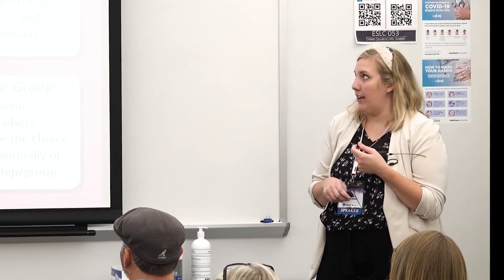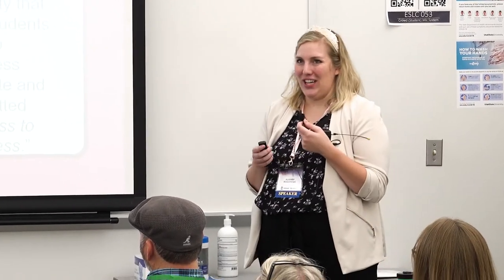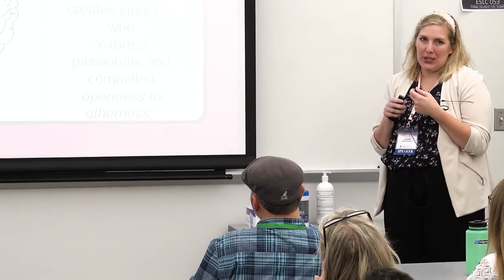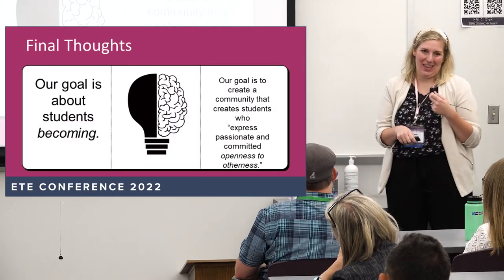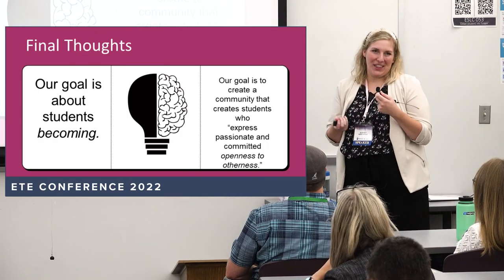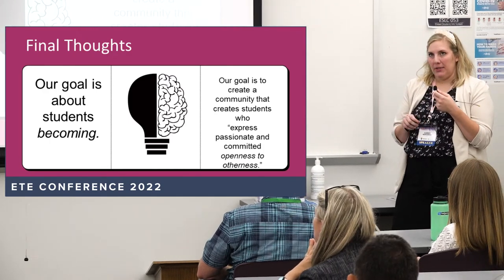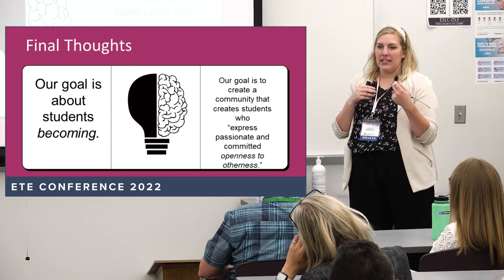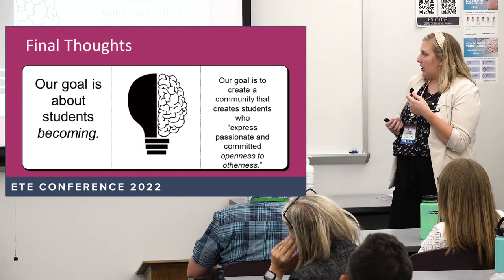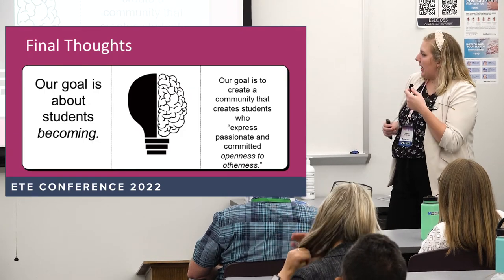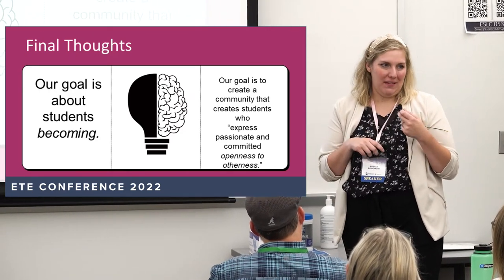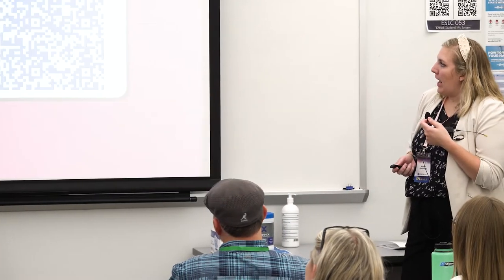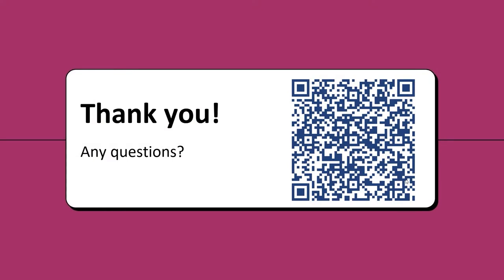Our final thoughts: our goal is all about students becoming and developing their knowledge, changing and evolving. Maybe they were a flat-earther when they came to your course, and now they've changed their perspective and believe the earth is round. We have to give students opportunities to pause their beliefs and consider the different perspectives and ideas that are out there. As Dempsey says, our goal is to create students who express passionate and committed openness to otherness, who are constantly able to pause and question their own beliefs and reinvent their learning as needed. This QR code links to a Google Doc with more information and examples from our slides.